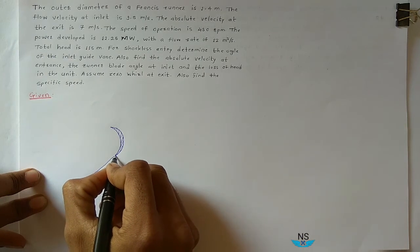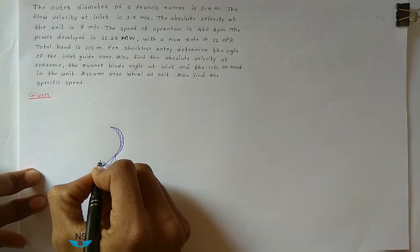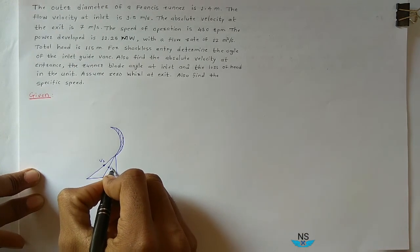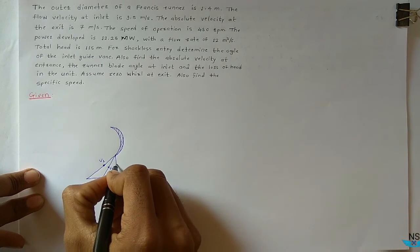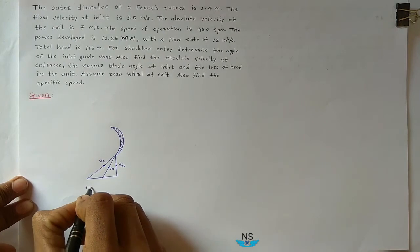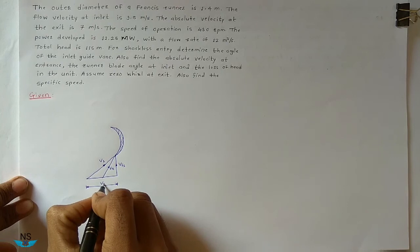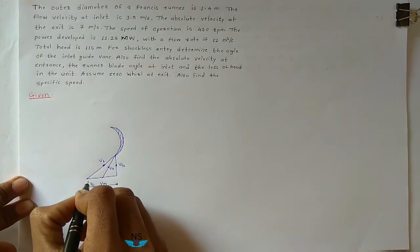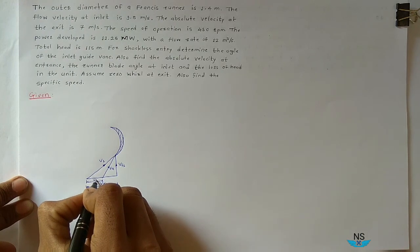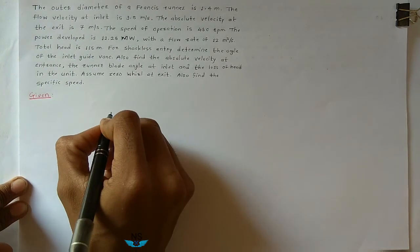In the inlet velocity triangle, this is the Absolute Velocity at Inlet, this is the Relative Velocity at Inlet, this is the Velocity of Flow at Inlet (Vf1), and this is the Velocity of Whirl at Inlet (Vw1). U1 is the Peripheral Velocity of the Vane at Inlet.